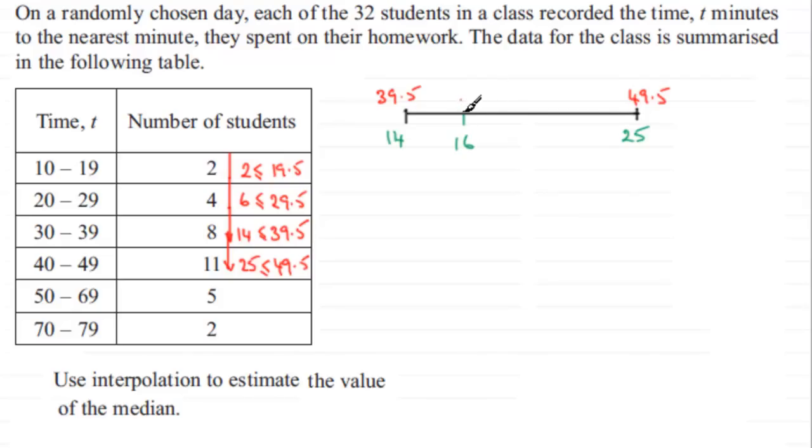The corresponding value for that is going to be the median Q2. All I do when I'm doing questions like this is do comparisons. I compare this width across here, the difference between Q2 and 39.5, with the one directly below it.